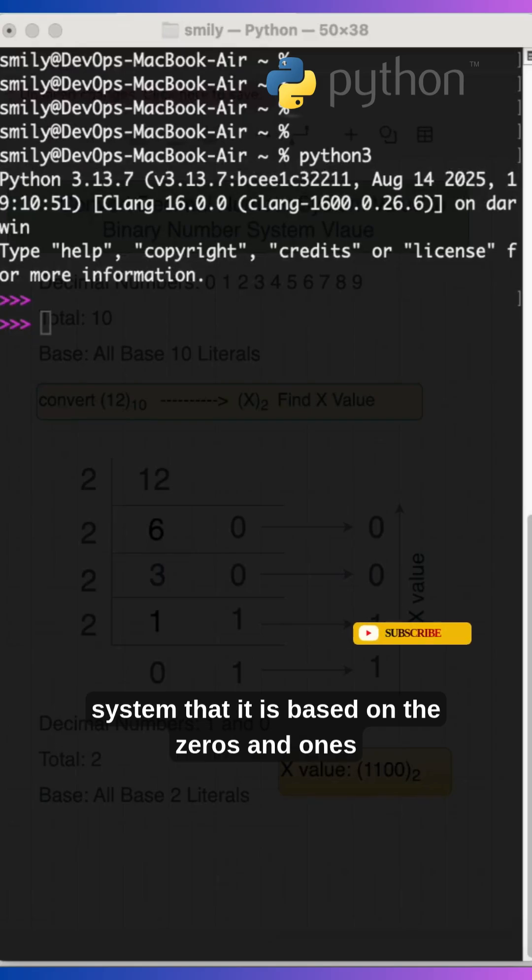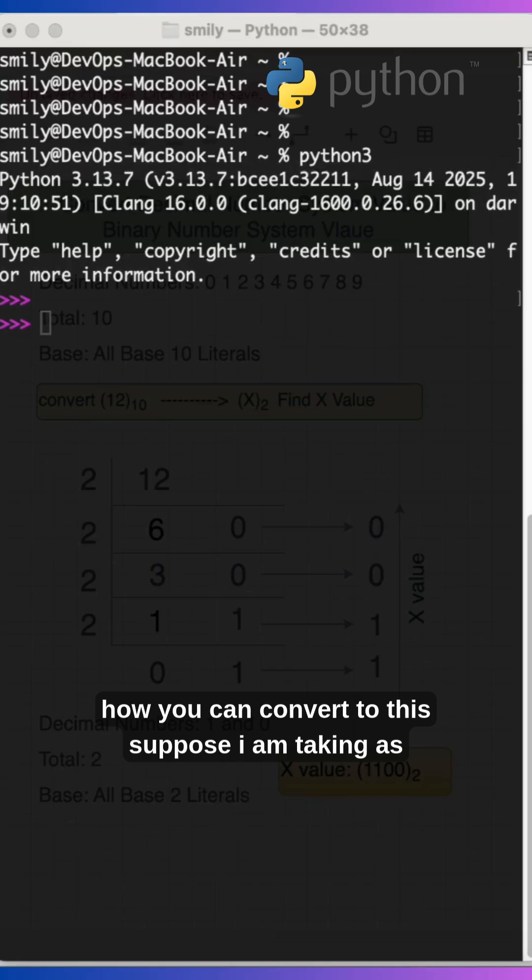Let's see a simple example of how you can convert this. Suppose I am taking a is equal to 13. This is a simple value and the type is int - it is a decimal number I want to convert to binary format.